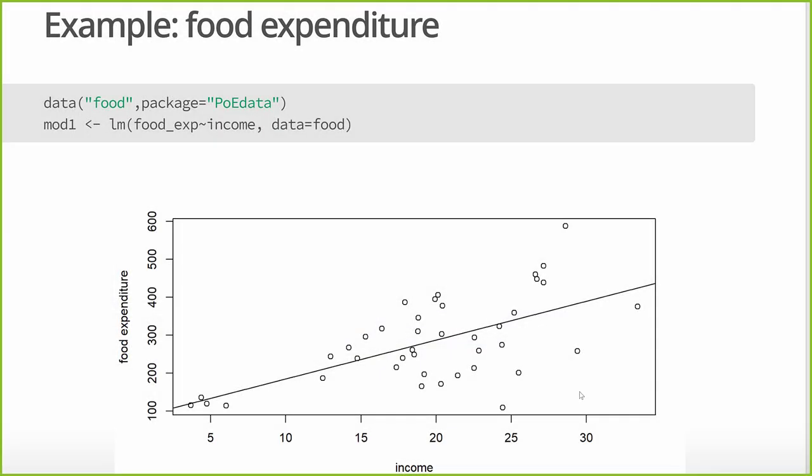So let's have a look. First thing we're going to do is look at an example we looked at in a previous chapter that's trying to explain food expenditure based on household income. We have household income and total weekly food expenditure. Measured in units, it doesn't really matter what the units are. They're consistent, so we're not going to worry about that. We're just going to put that into a nice linear model.